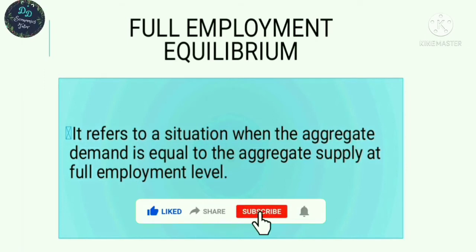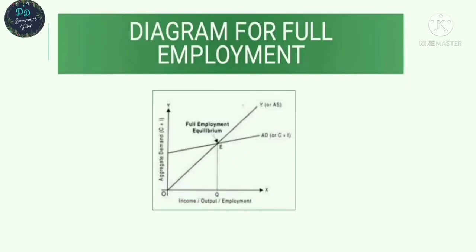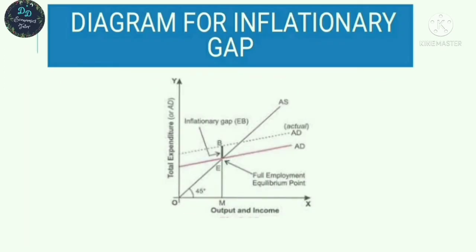Now looking at the inflationary gap diagram: the 45-degree line represents aggregate supply. Point E is the full employment equilibrium, corresponding to income output OM on the X-axis. The desired aggregate demand curve at point E corresponds to the full employment level of resources, that is OM. FE represents the inflationary gap — the difference between actual aggregate demand and the aggregate demand required for full employment equilibrium.